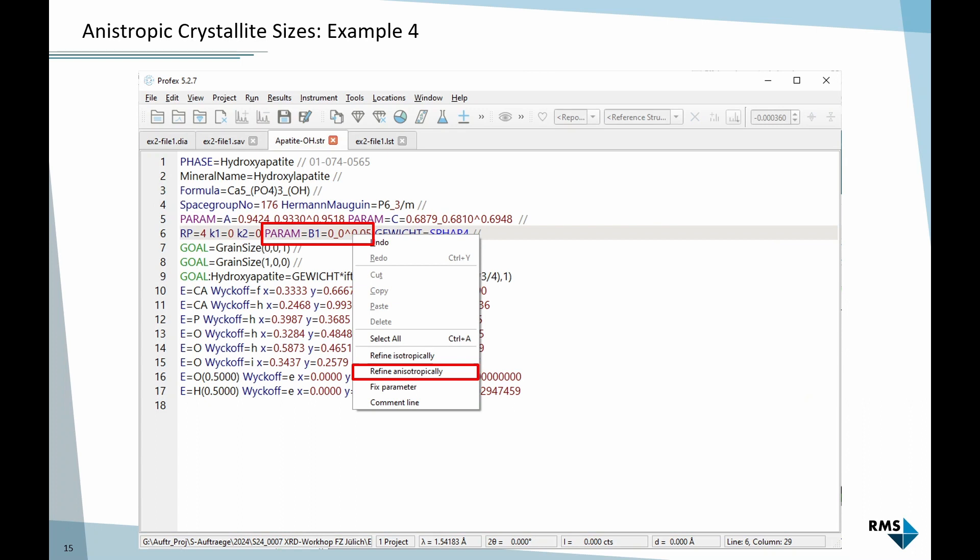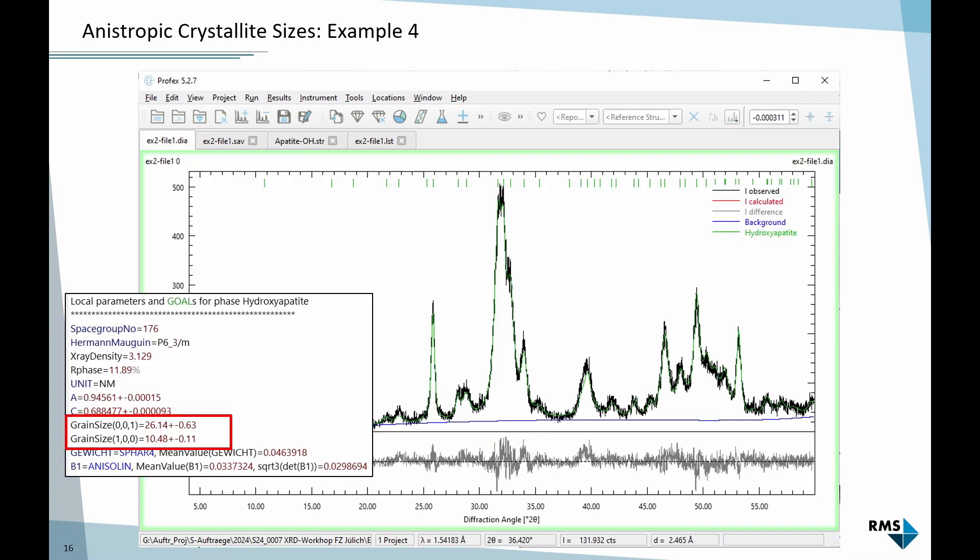Luckily we can solve this very easily. In the structure file, we set the refinement of the B1 parameter to anisotropic. The keyword will change a little bit - it will add this aniso keyword. If we refine it now, we will get a very good fit of the wide and the narrow peaks. In the list file, it will report different crystallite sizes for the crystallographic direction 001 along the C axis. The width of the needles is about 10 nanometers, the length is 26 nanometers.